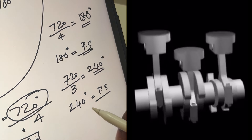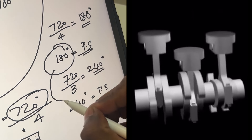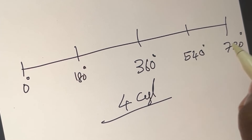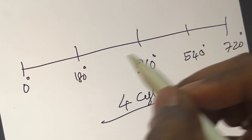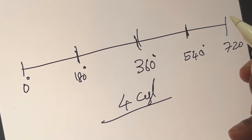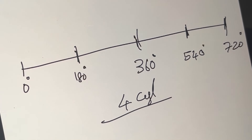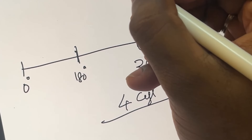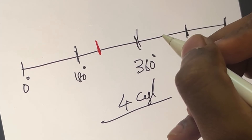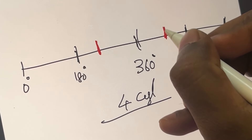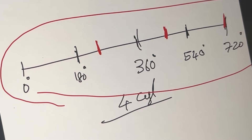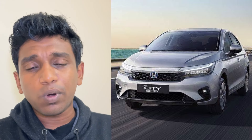There is a difference between 3 and 4 cylinders: 180 degrees versus 240 degrees between power strokes. In a 4-cylinder engine across 0–720 degrees, power strokes occur at every 180 degrees — at 180, 360, 540, and 720 degrees. In a 3-cylinder engine, power strokes occur at 240, 480, and 720 degrees.